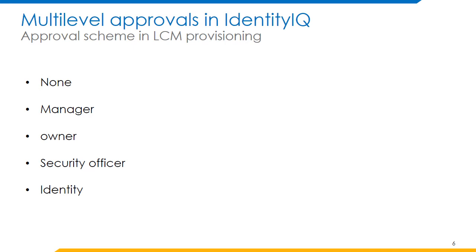Let's consider a scenario where we are requesting access to an entitlement for a user. Because the entitlement is high risk, we need approval from both the manager and the entitlement owner. To achieve this business scenario, SailPoint IdentityIQ provides an out-of-the-box feature known as Approval Scheme. According to the value in the approval scheme, approvals are sent to the manager and entitlement owner respectively.